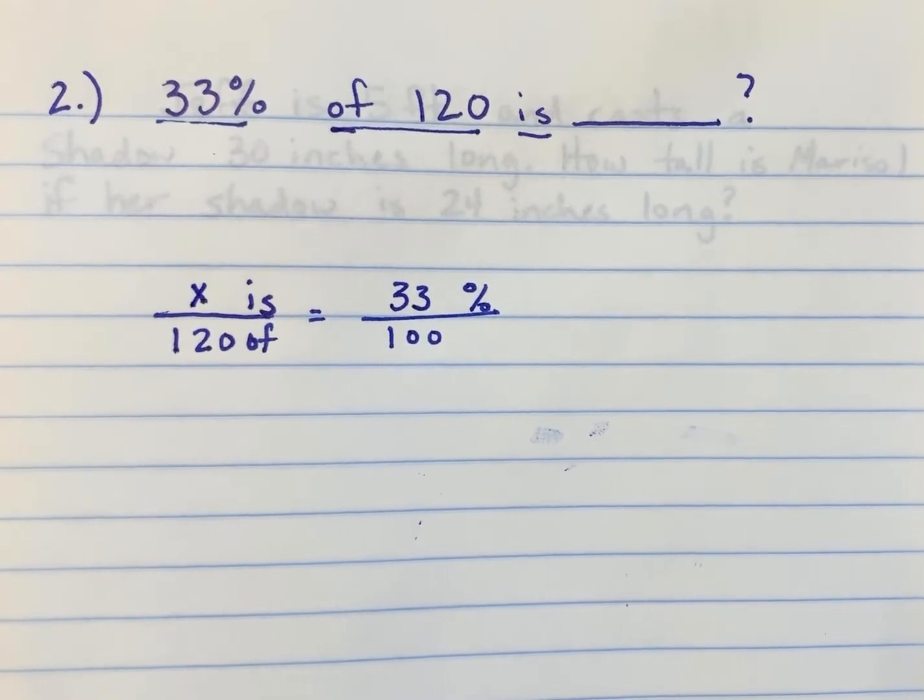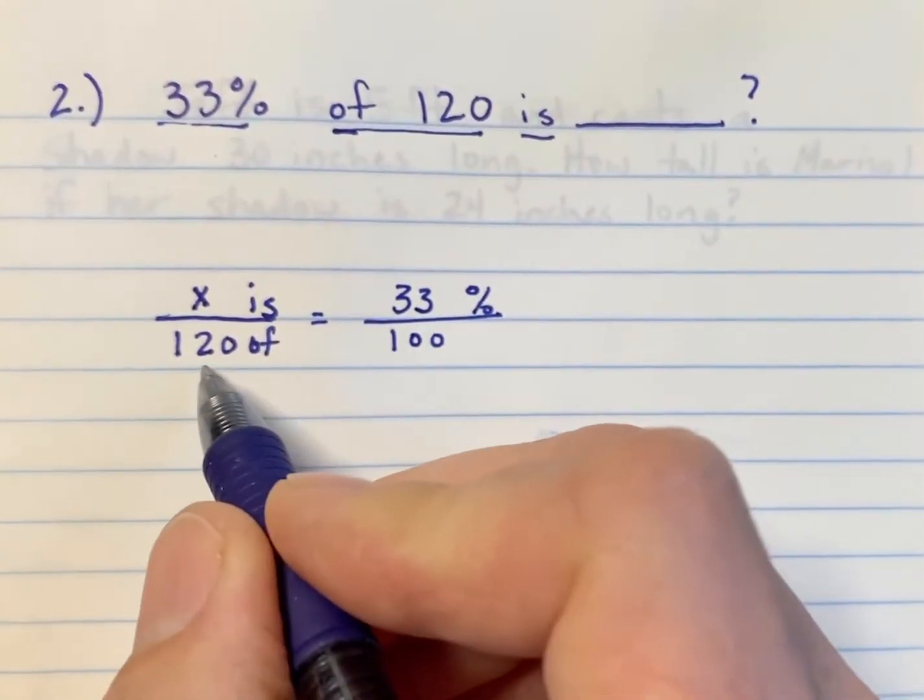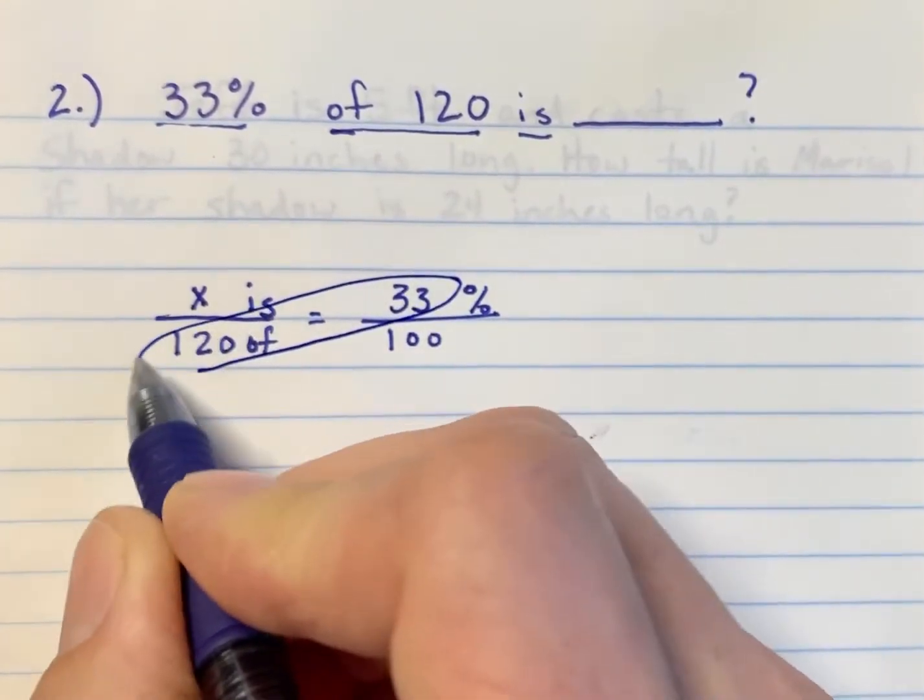So, now I have my proportion set up. To solve this proportion, we're going to cross multiply the diagonal.